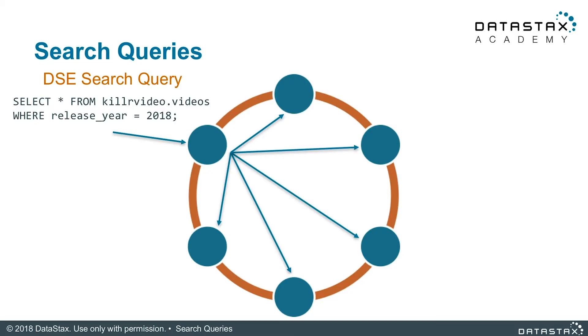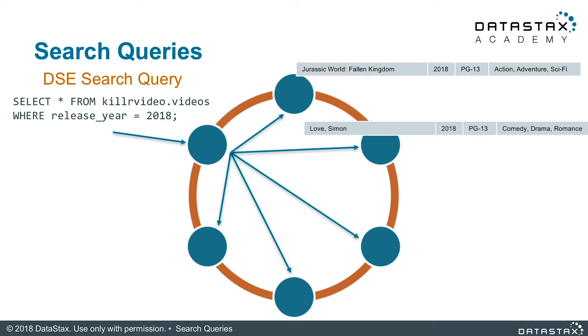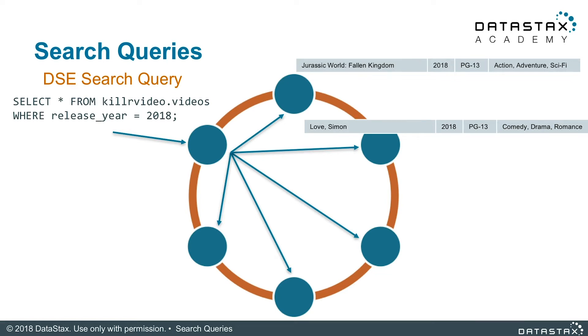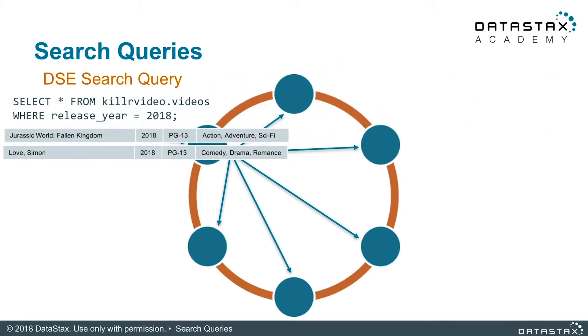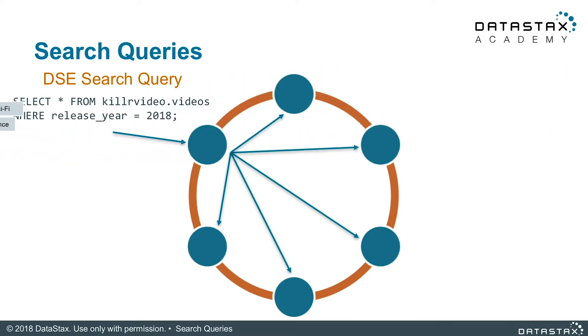Now that we've reminded ourselves of what DSC Core queries would look like in this case, let's review how this would work with DSC Search using the same query that is looking for movies based on release year. While the query will still need to be sent to all nodes, instead of having to read each and every node, DSC Search will use the search index to do a check. This makes it more efficient, with the filtering taking place at the index level and not the query level. Only rows that match the requested parameters will be read and returned.